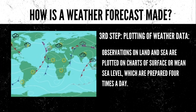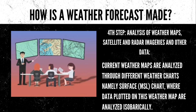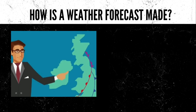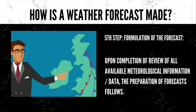Third step: plotting of weather data. Observations on land and sea are plotted on charts of surface or mean sea level, which are prepared four times a day. Fourth step: analysis of weather maps, satellite and radar images, and other data. Current weather maps are analyzed through different weather charts, including the surface MSL chart, where data plotted are analyzed isobarically. Fifth step: formulation of the forecast. Upon completion of review of all available meteorological information or data, the preparation of the forecast follows.